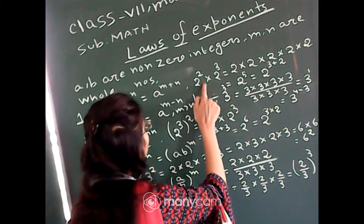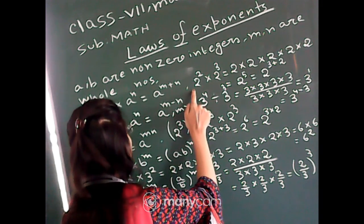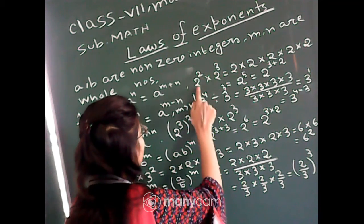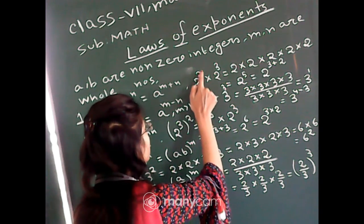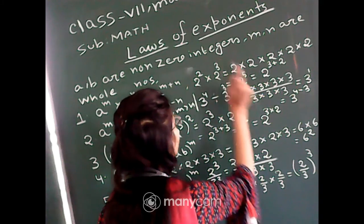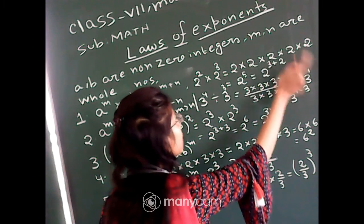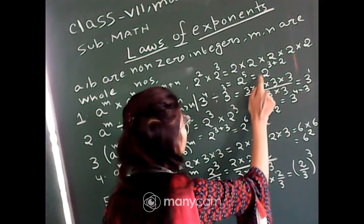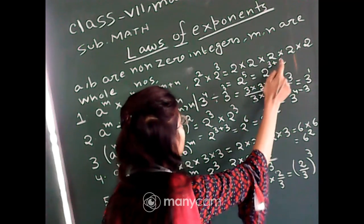For example, 2 square into 2 cube — comparing with the law, a equals 2, m equals 2, n equals 3. The bases are same but the powers are different. Since the power of 2 is 2, we write 2 two times, and the power of 2 is 3, so we write 2 three times. Now 2 appears 5 times, so this equals 2 to the power 5, that is 2 to the power 3 plus 2, which is a to the power m plus n.